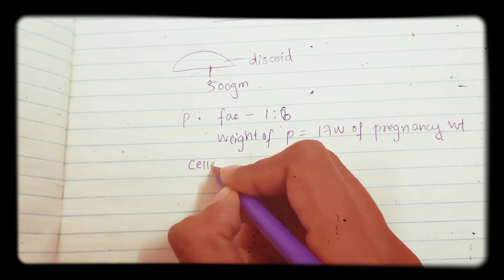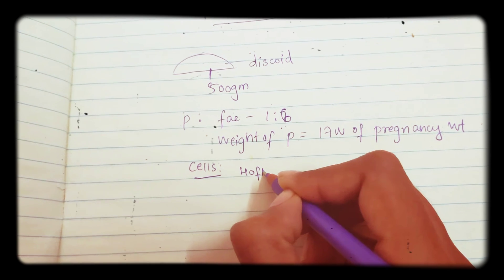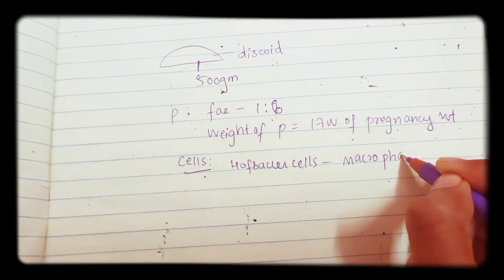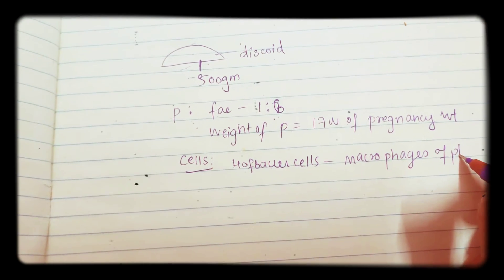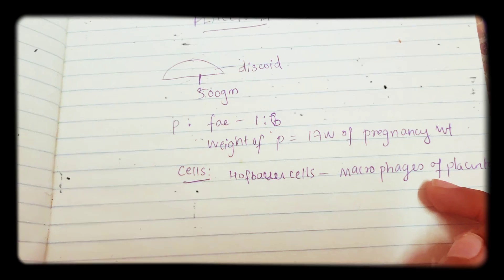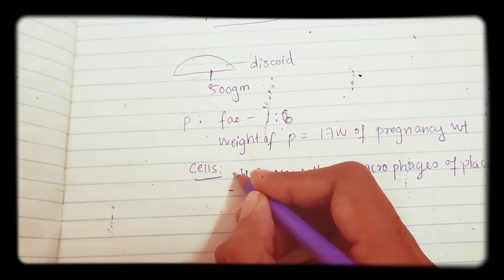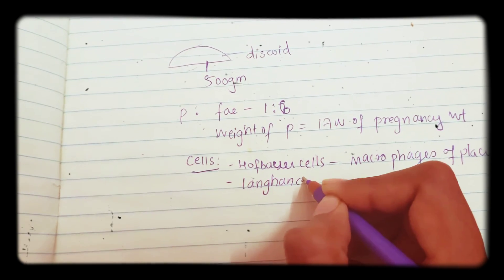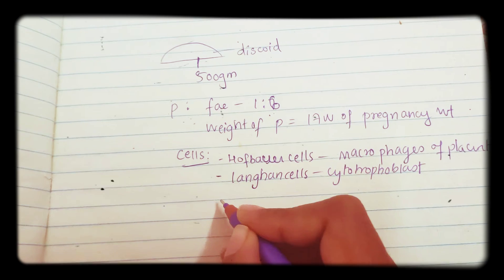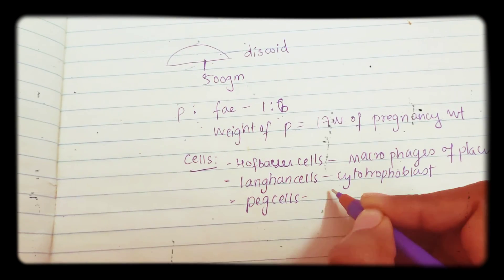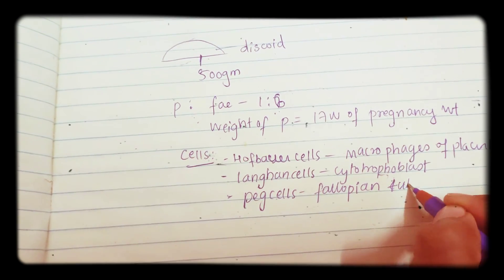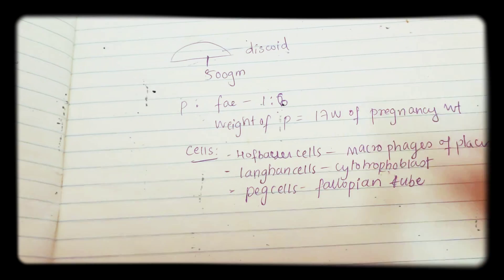Now let us see the different cells of placenta. You have Hofbauer cells — these are the macrophages of the placenta. We also have Langhans cells, which are nothing but cytotrophoblast. Next are the peg cells, which are present in the fallopian tube. These are important named cells you need to remember. This concludes the basic introduction of placenta.